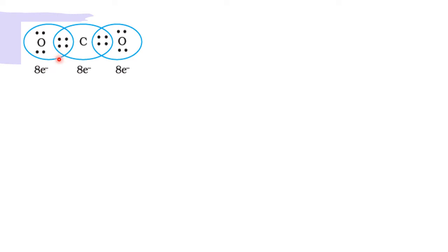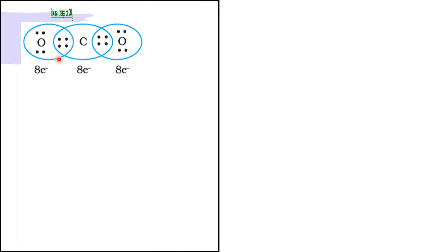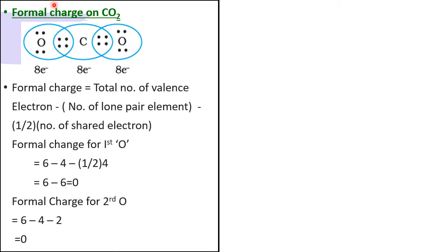Now we calculate the formal charge. Formal charge on the first oxygen: number of valence electrons = 6, number of non-bonding lone pair electrons = 4, minus half of bonding electrons (4/2 = 2). So 6 minus 4 minus 2 equals zero. There is no formal charge on this oxygen. The same applies to the second oxygen — it is also zero. This oxygen has not lost or gained any electrons.